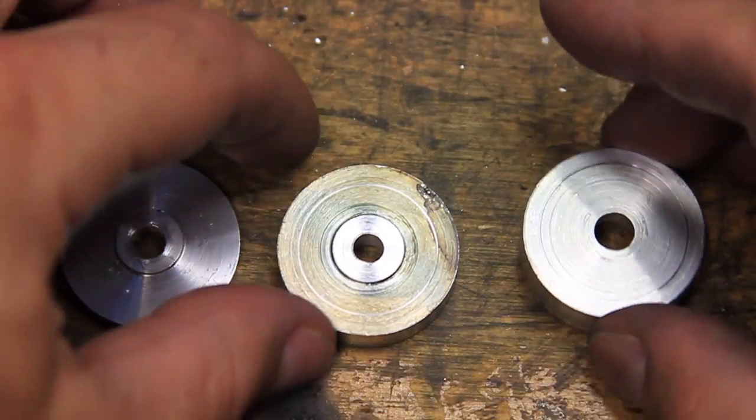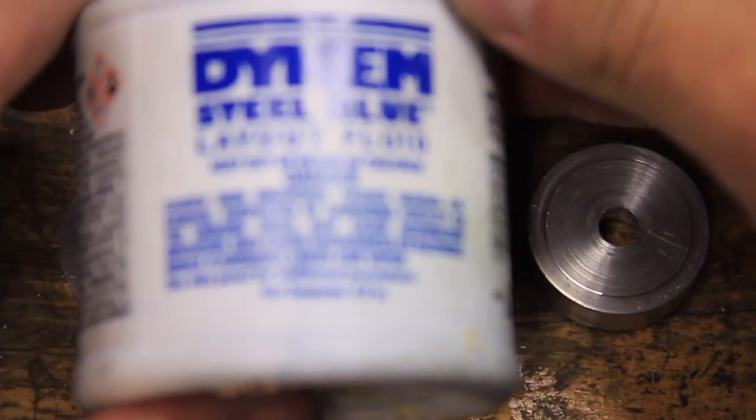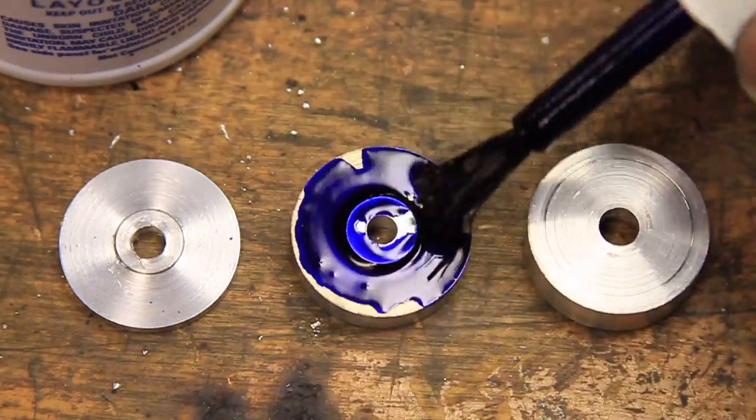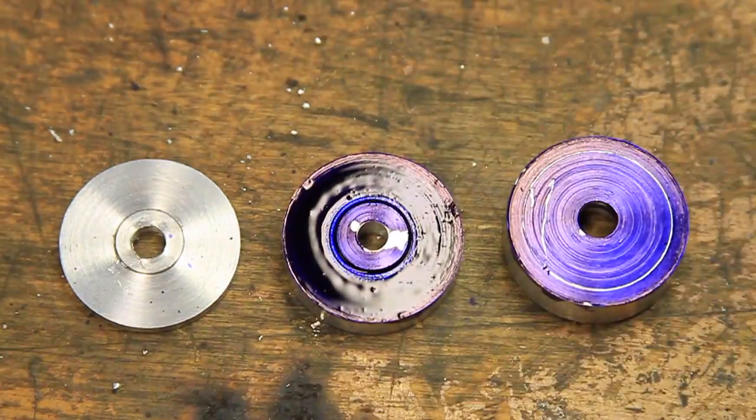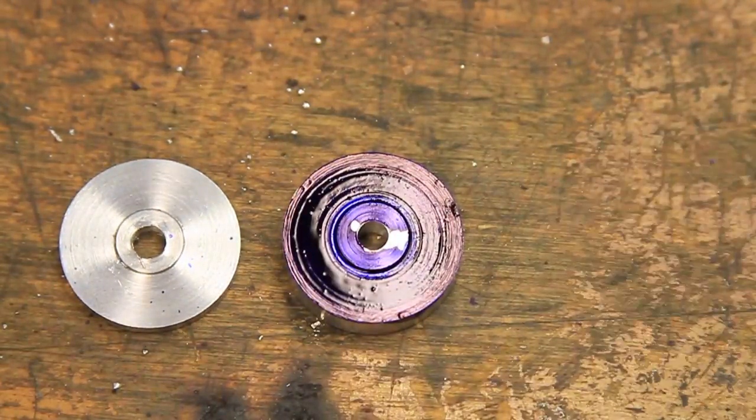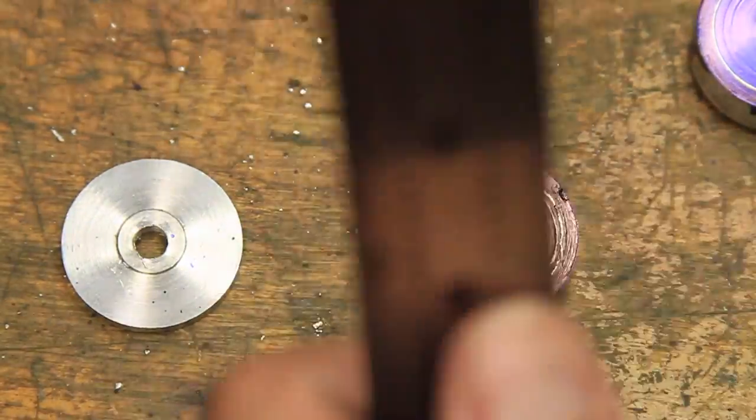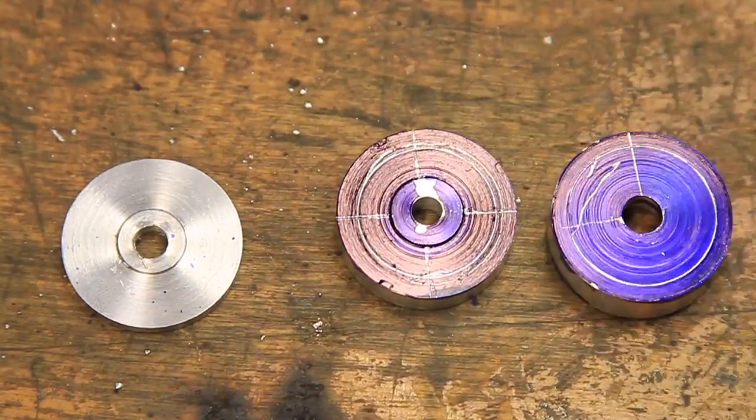At this point almost all the lathe work is done on the three pieces and layout fluid is used again to mark the locations of all the holes to be drilled. Two of the holes will be through holes and later threaded with M4 threads, and three of the holes will be blind holes which will be where the magnets will live. Time to drill a bunch of holes.